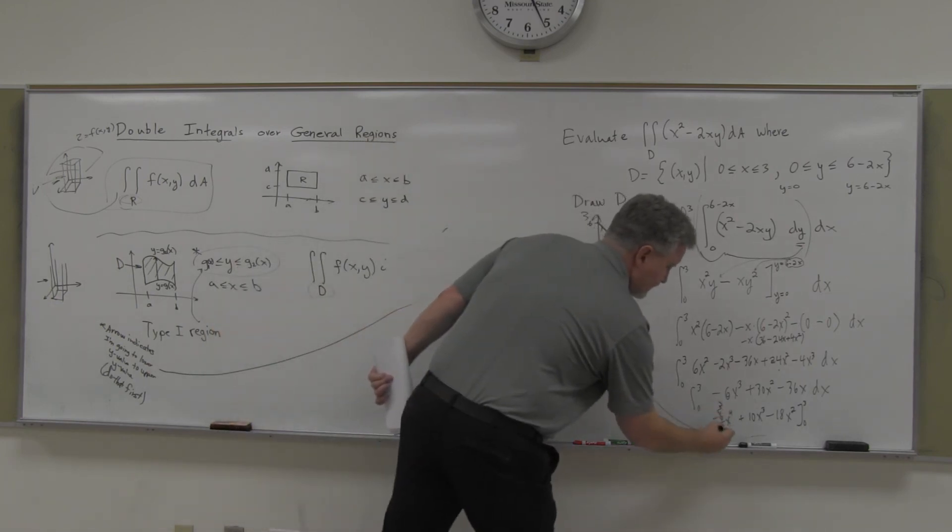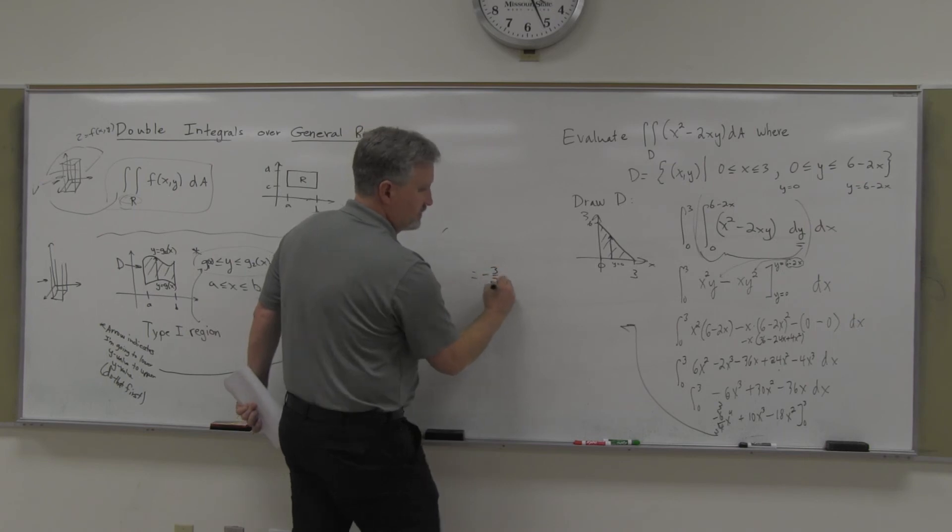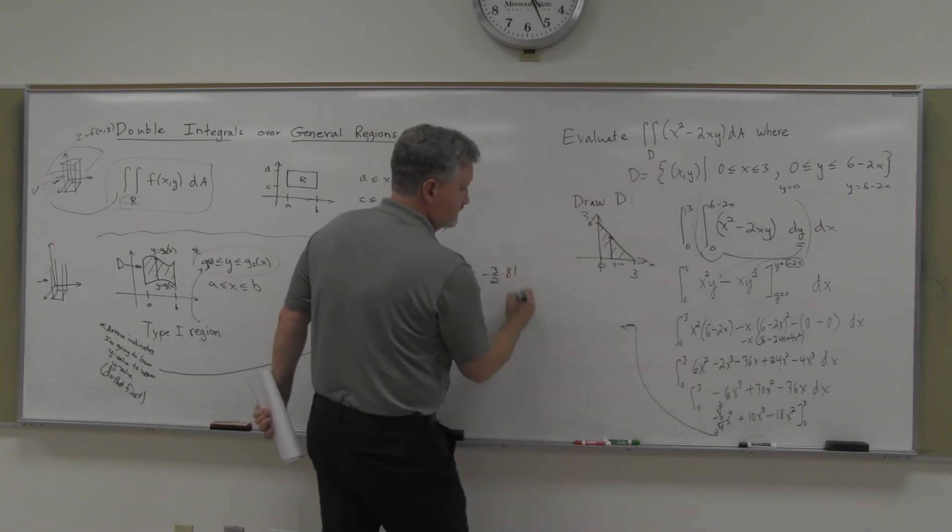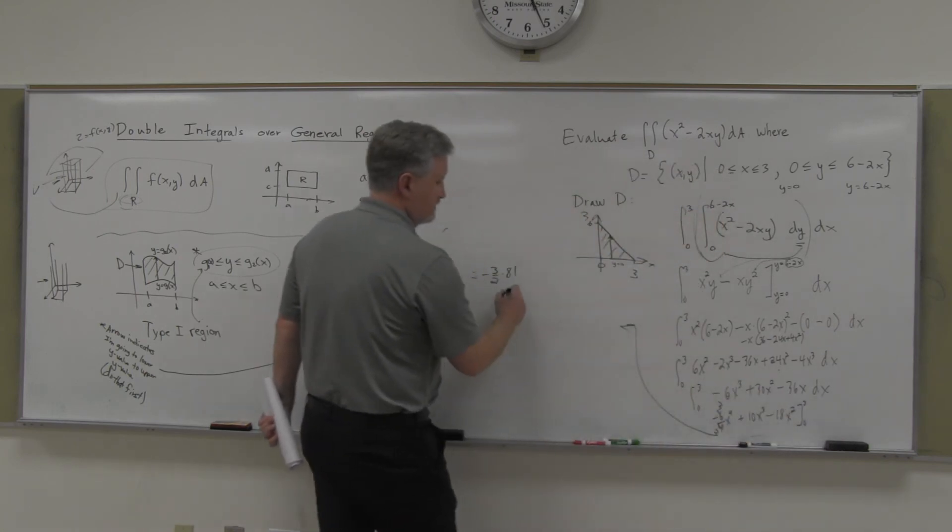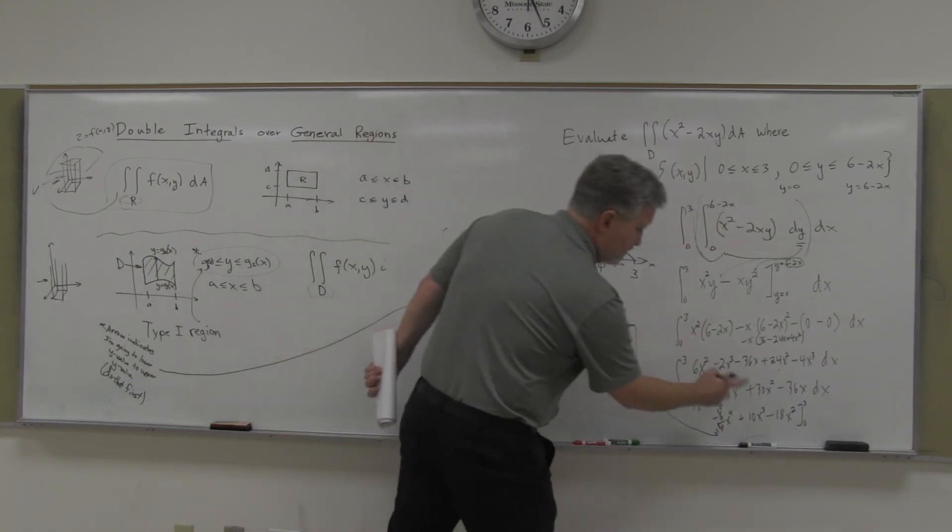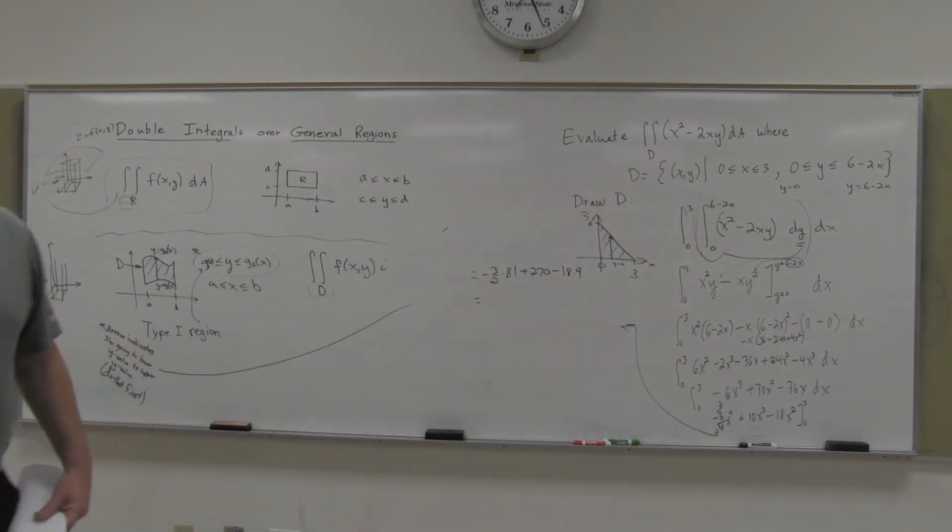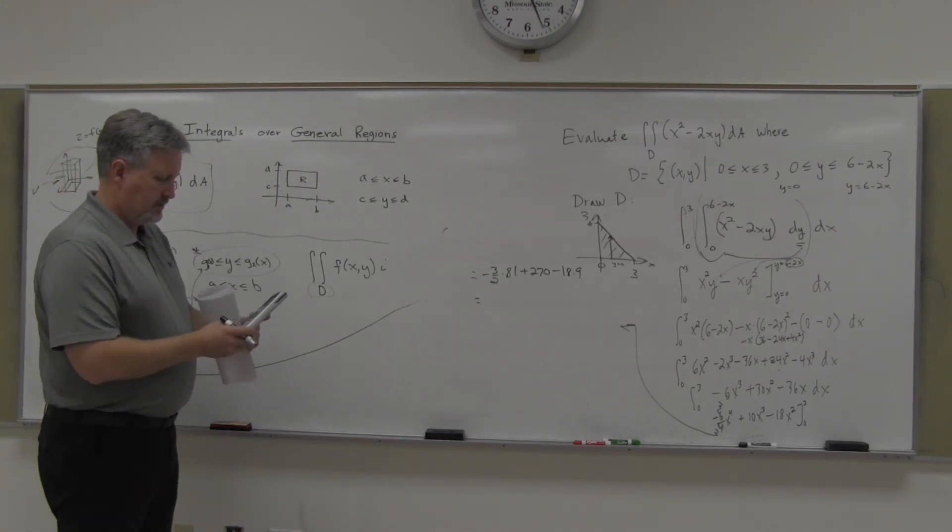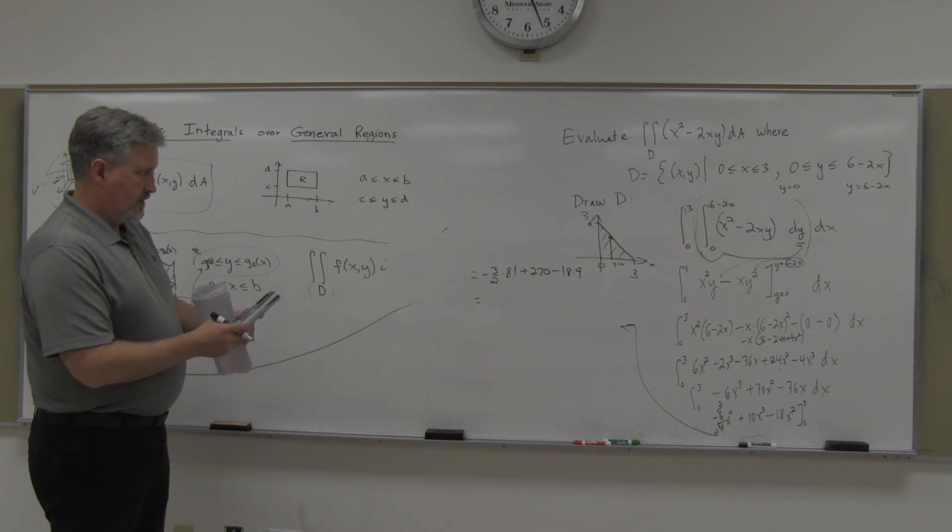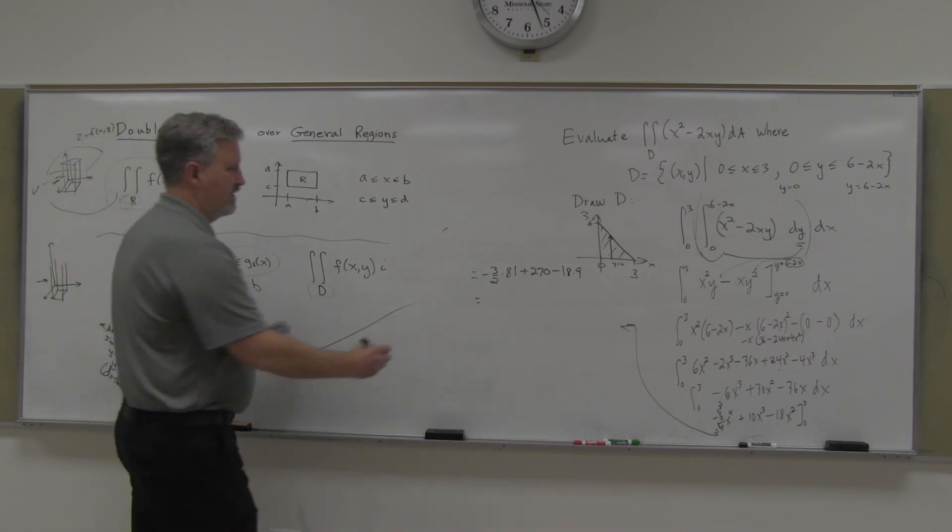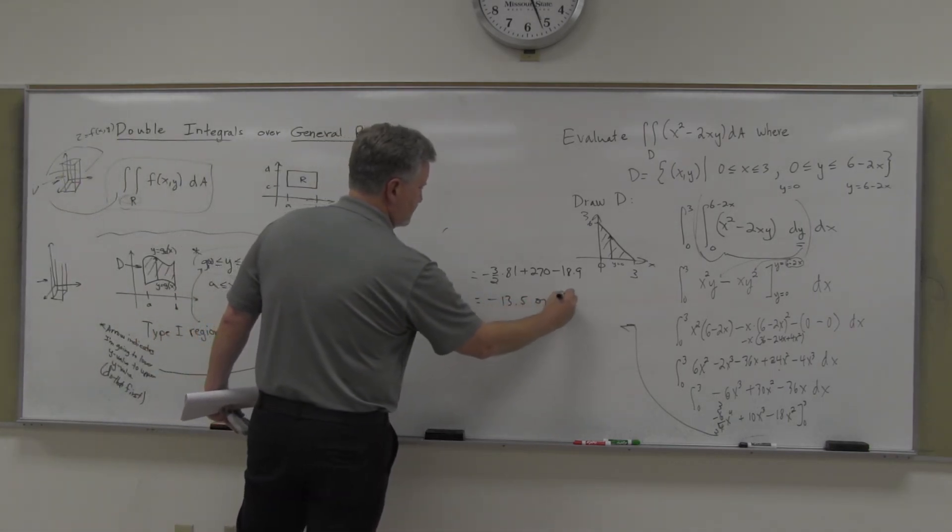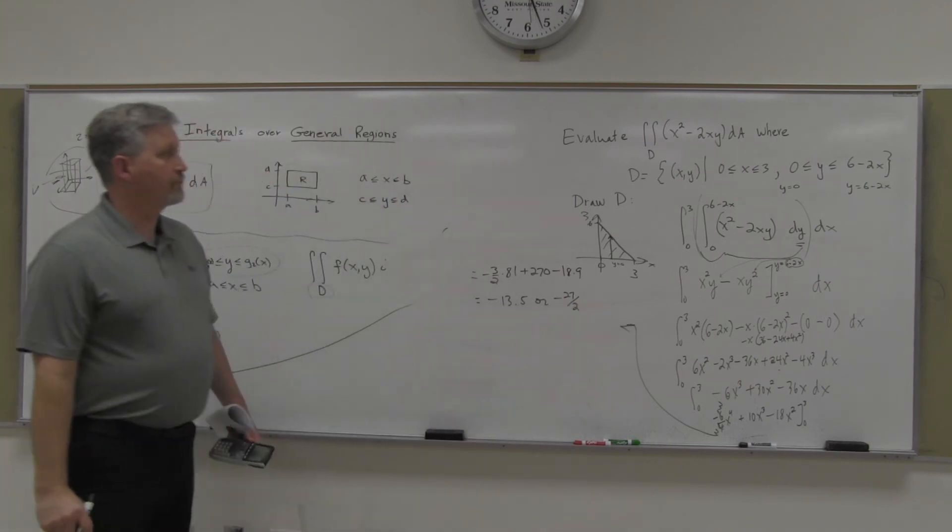Of course, that's 3 halves, so it would be minus 3 halves, 3 to the fourth is 81, 10 times 27, so it's 270, and then minus 18 times 9. So, plug that in. Question or concern? Negative 13.5, or 27. Negative 27. Negative 27.5.